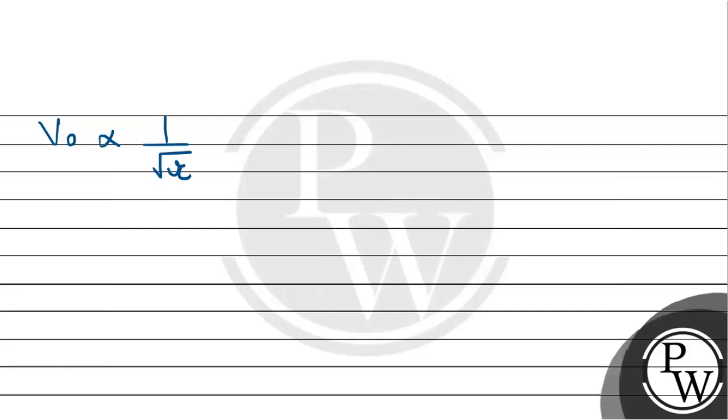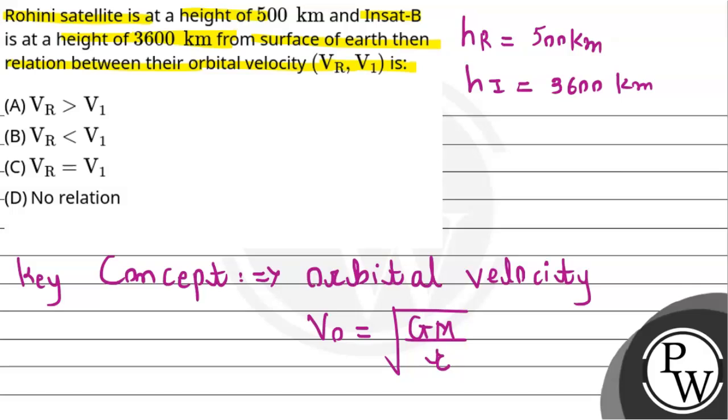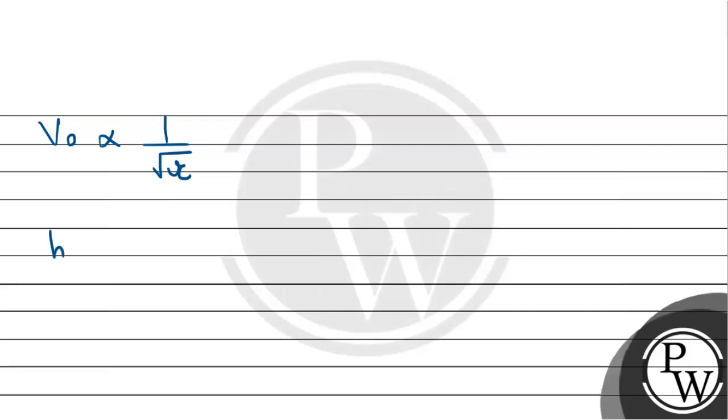We can see that HR is 500 kilometers and HI is 3600 kilometers.